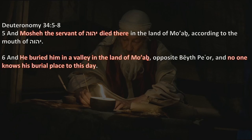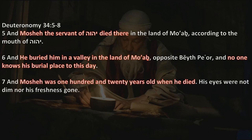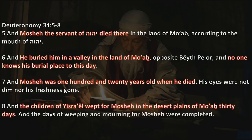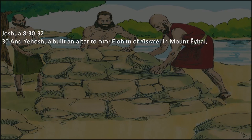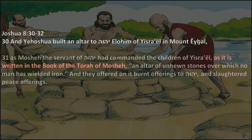No one knows his burial place to this day. Moses was 120 years old when he died — his eyes were not dim nor his freshness gone. The children of Israel wept for Moses 30 days. This is written in the Torah, yet it describes events after Moses's death, so there's a likelihood that somebody else wrote and recorded it. These events are the ones that happen in Joshua 8:30-32.